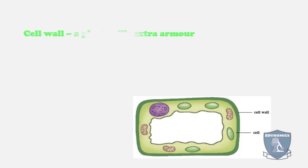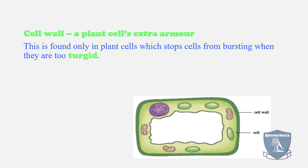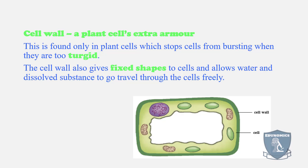In plants, they have a cell wall. The cell wall in plants is the armor coating for that cell. This is only found in plant cells. It stops the plant cell from bursting if it becomes too turgid. The cell wall holds the plant cell together and gives it its fixed shape.